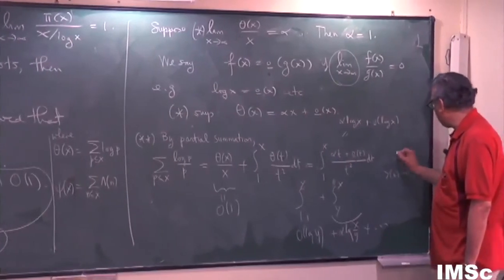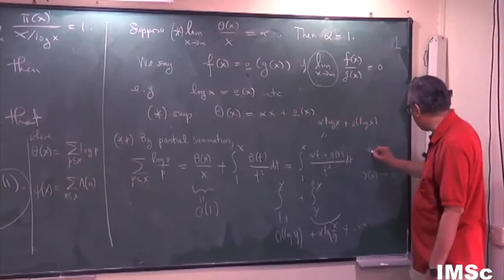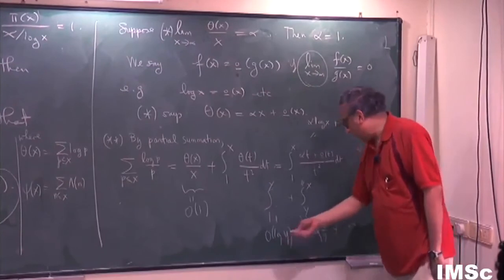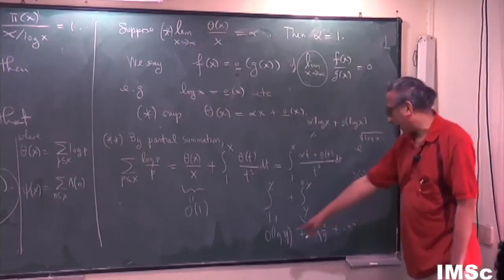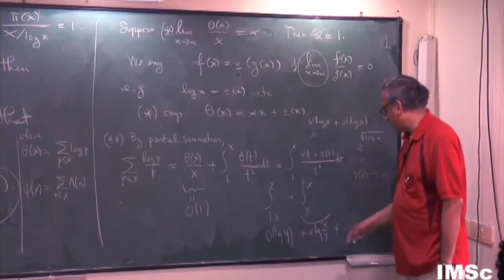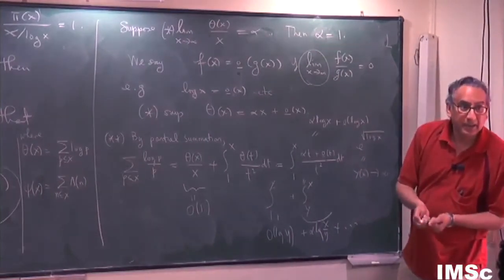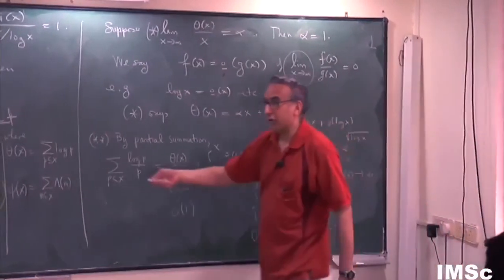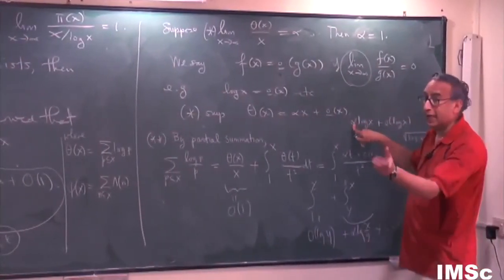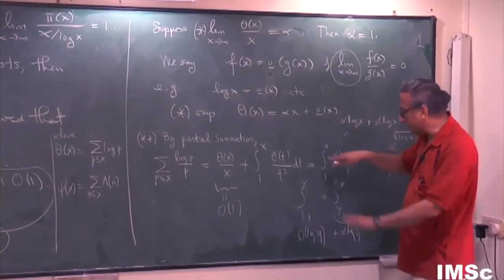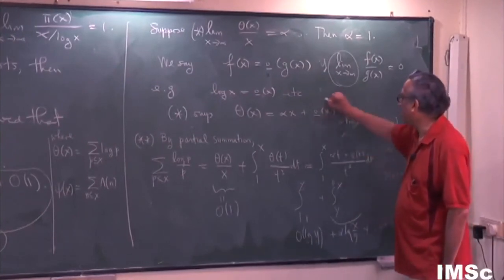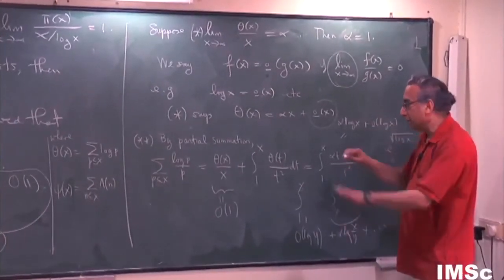And then if you—it turns out that if you choose, well, this is not the only choice, but if you choose y to be like e to the root log x, then the log y here will be root log x. This is y. Log y would be root log x. So that the contribution from the y factor is substantially smaller than log x. Since the main term on the left-hand side is log x and the other term here is α log x, you then deduce α has to be one. So this is a little bit of a trick exercise in analytic number theory, which you should master in how to use the little o symbol. But that's the proof.